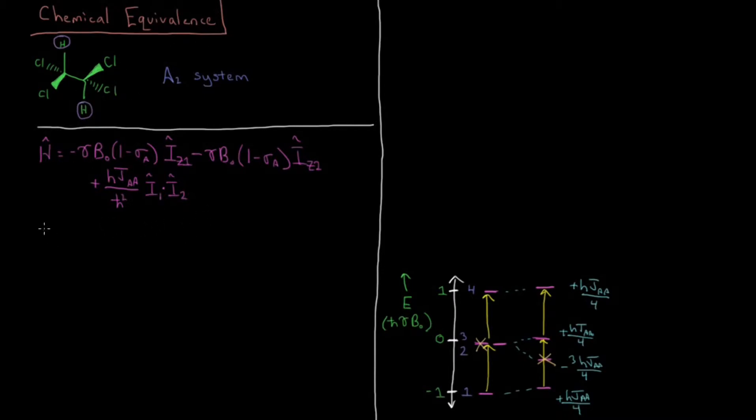So just like before, we're going to use first-order perturbation theory, so we're going to define a reference Hamiltonian H0, which is just the first two terms up here, minus gamma B0 times 1 minus sigma A. And you notice that part was the same for both of our protons here, so we can actually factor out our operators here, IZ1 plus IZ2. So that's our zero-order, our reference Hamiltonian. And then we define our perturbation, our perturbation operator H1, which is going to be H JAA over H-bar squared, times the dot product, or the correlation between the total nuclear spin angular momentum of proton 1 and proton 2.